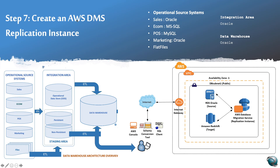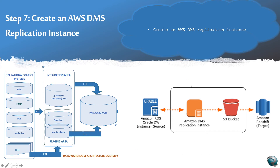Then create an AWS DMS replication instance. This replication instance is critical. The DMS replication instance takes data from your Oracle data warehouse source — using the SCT and DMS toolset — loads it into the DMS replication instance, then into an S3 bucket, and finally back into Amazon Redshift. I'll cover S3 bucket details in a separate video.